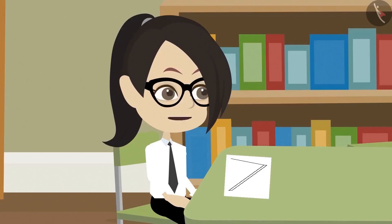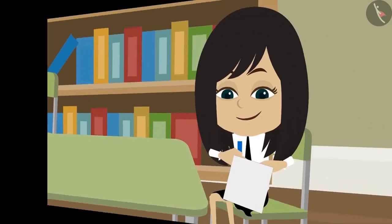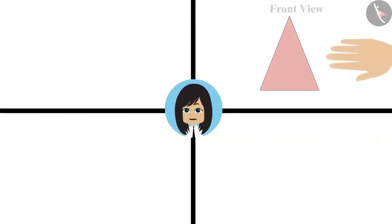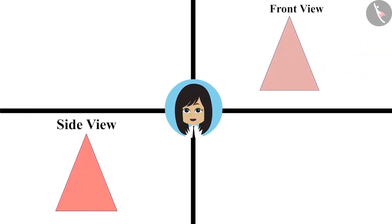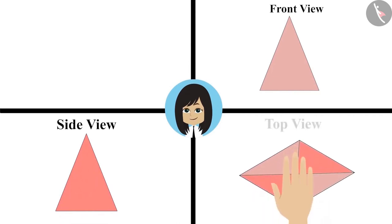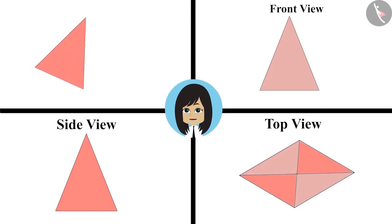Let's make one more. Look at the front view of my drawing. This is a triangle. This is the side view of my drawing. This is also a triangle as before. And this is the top view of my drawing. It has become very difficult. I will try to make it. Let me first make a drawing of its side view. Now I will add its front view. It has four sides and all are triangles. That means it is a drawing of a pyramid.